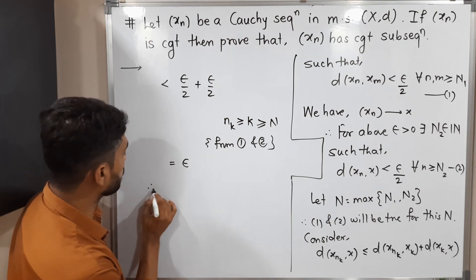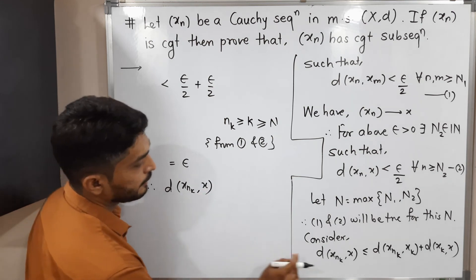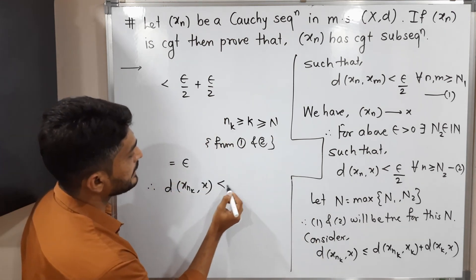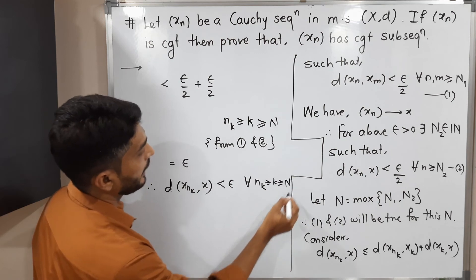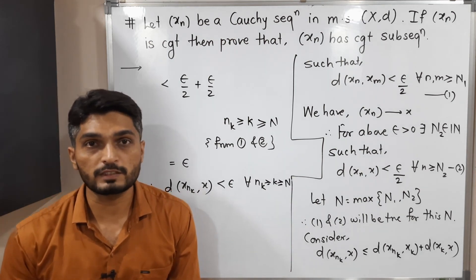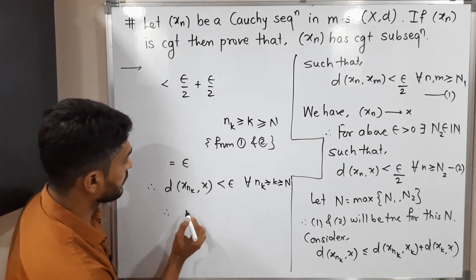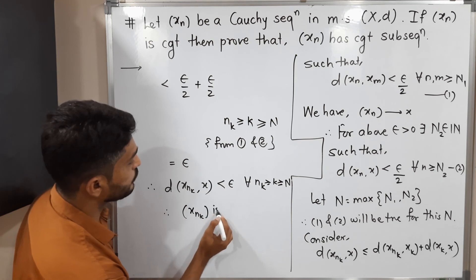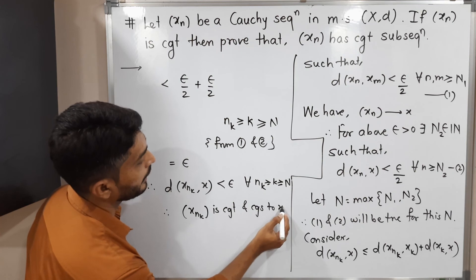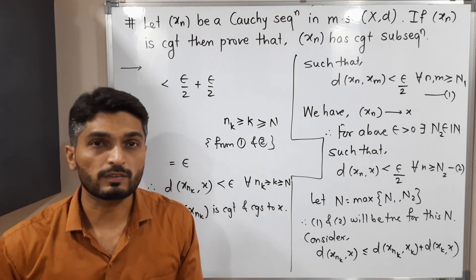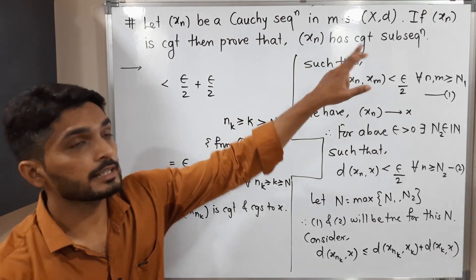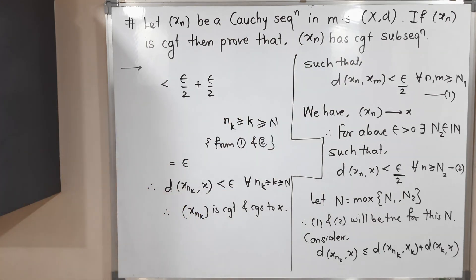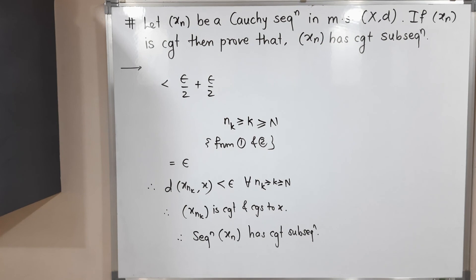Therefore, D(XnK, X) < ε for all K ≥ N. This is precisely the definition of a convergent sequence, so XnK converges to X. Since we selected any subsequence of Xn and proved it is convergent and converges to X, we can conclude that the given sequence Xn has a convergent subsequence. Thank you.